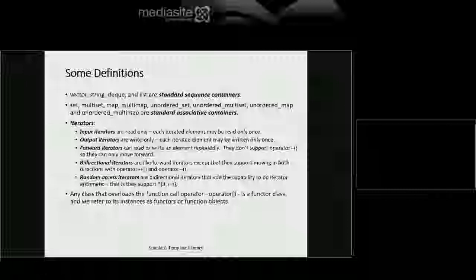The STL divides its containers into two classes: standard sequence containers and standard associative containers. The set and multi-set are kind of halfway in between. For associative containers, the mental model is you have a key value and with each key you associate a value — that's why it's called associative. The set doesn't have a key and a value separately, but they're classified as associative because they have an underlying data structure.